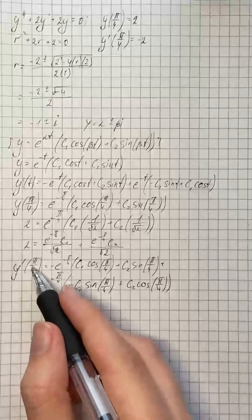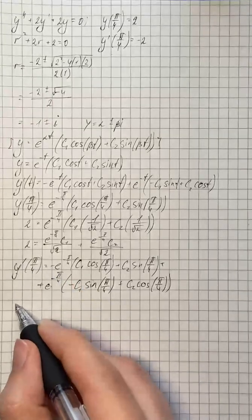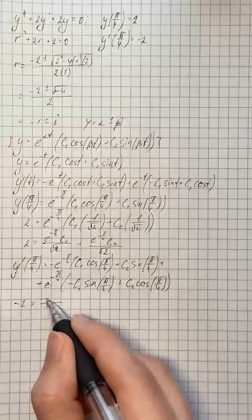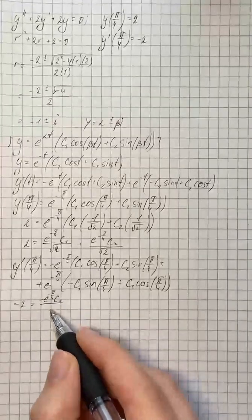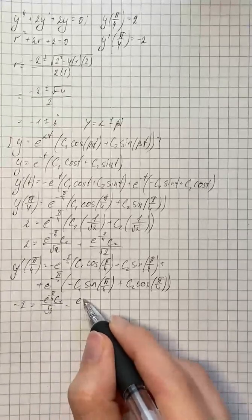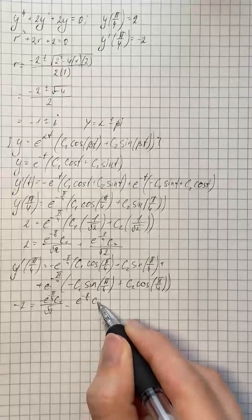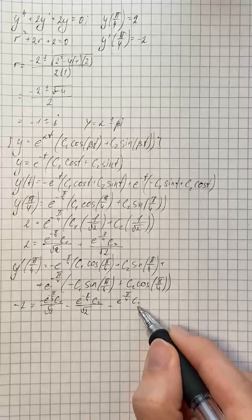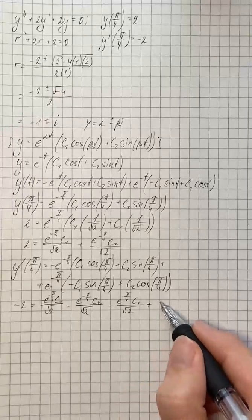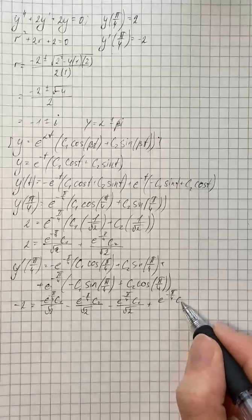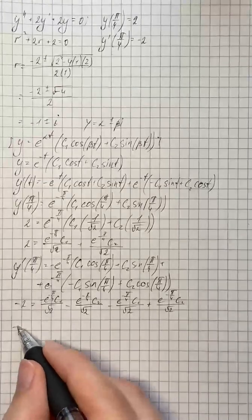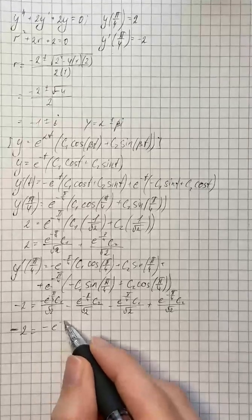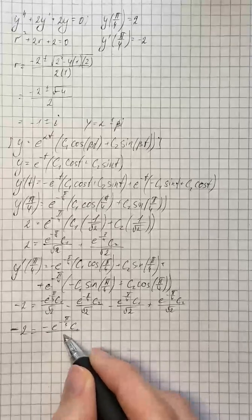We know that y'(π/4) equals negative 2. On the right-hand side we have negative e to the negative π/4 times c₁ over square root of 2, minus e to the negative π/4 times c₂ over square root of 2, minus e to the negative π/4 times c₁ over square root of 2, plus e to the negative π/4 times c₂ over square root of 2. So we get negative 2 equals negative e to the negative π/4 times c₁ over square root of 2.